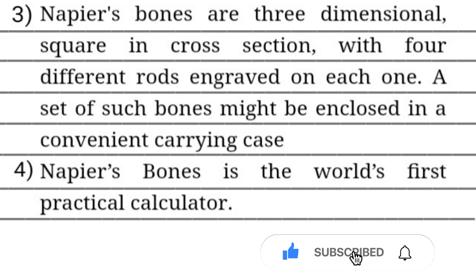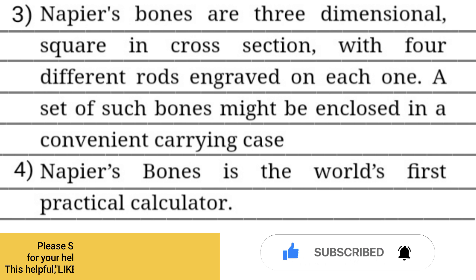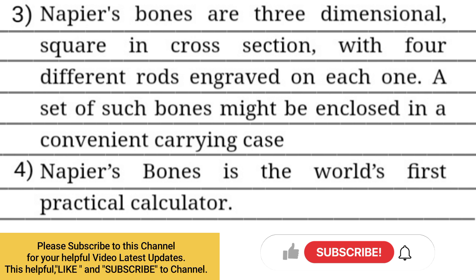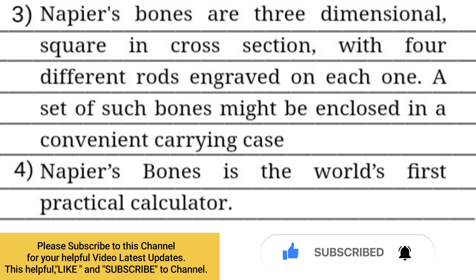3. Napier's bones are three-dimensional, square in cross-section, with four different faces on each rod. A set of such bones might be enclosed in a convenient carrying case.